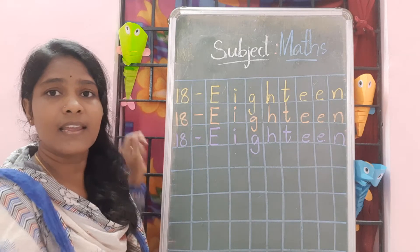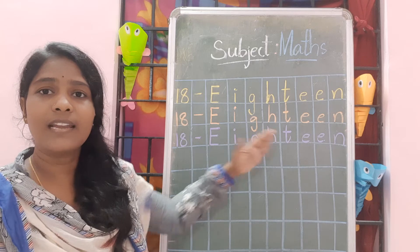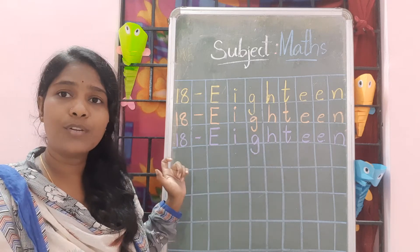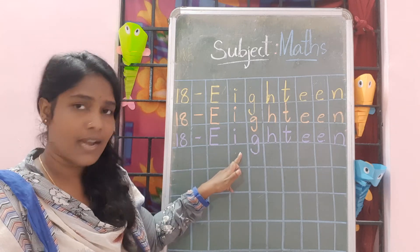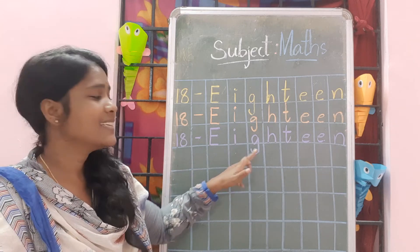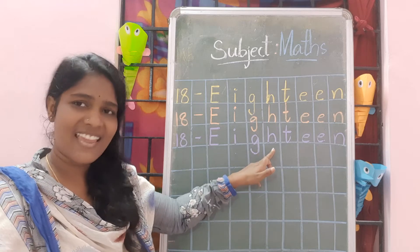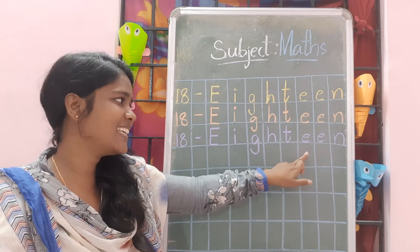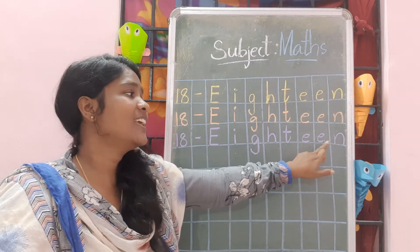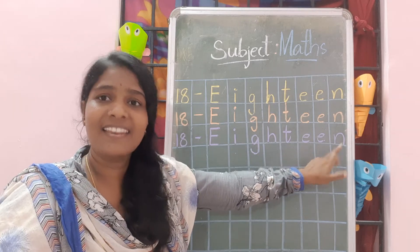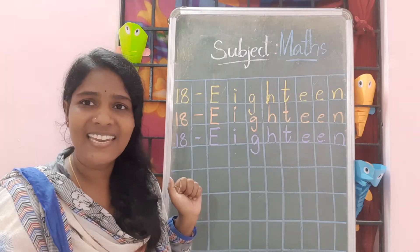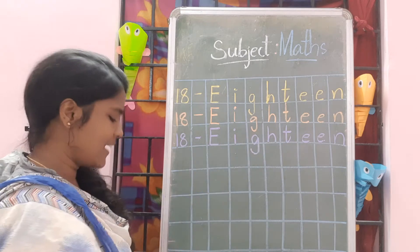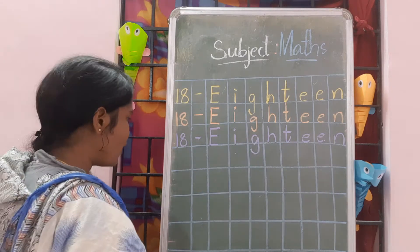18. After writing the number name, read out again: 18 — E, I, G, H, T, E, E, N. 18. After writing again, write in the next box.